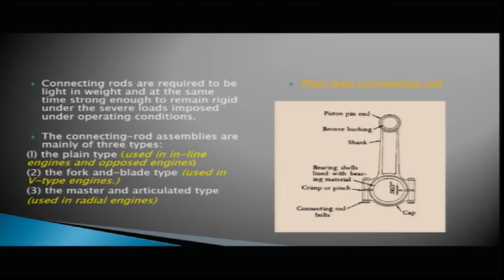The connecting rod assemblies are mainly of three types: the plain type — used in inline and opposed engines — the fork and blade type — used mainly on V-type engines — and the master and articulated type — mainly used in radial engines.